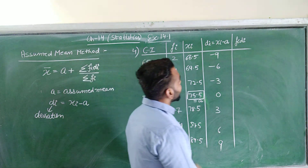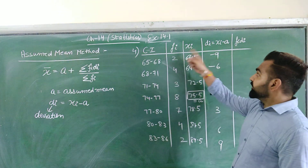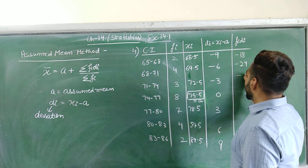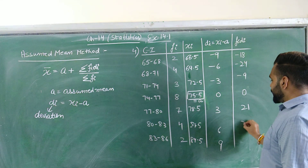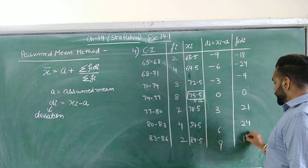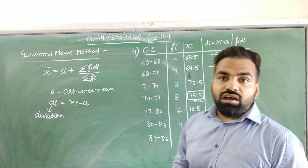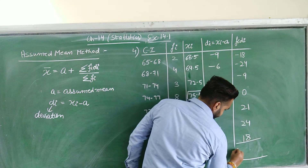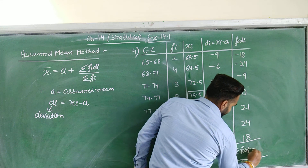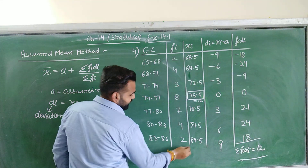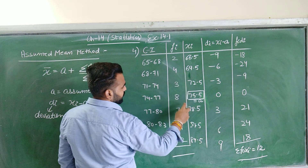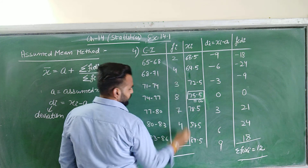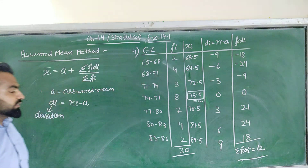Now we have to find the values of fᵢdᵢ by multiplying fᵢ and dᵢ. The values are: 2 × (−9) = −18, then −24, −9, 0, 21, 24, and 18. So these are the values of fᵢdᵢ. Now calculate Σfᵢdᵢ and Σfᵢ. Σfᵢdᵢ = 12 and Σfᵢ = 30.